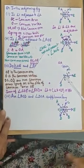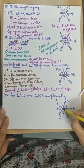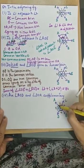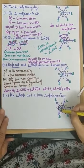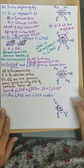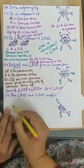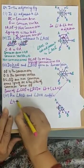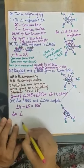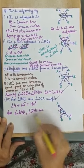Now the fourth part: are angles BOD and DOA supplementary? BOD is angle 4 and DOA is angle 5. Supplementary means the sum of these two angles forms a straight angle. Angle 4 plus angle 5 is equal to 180 degrees. So angle BOD and angle DOA are supplementary.